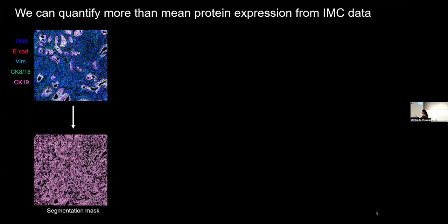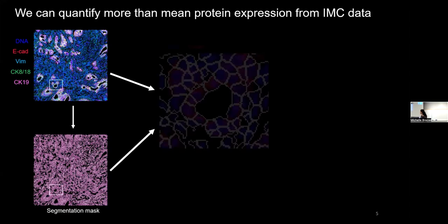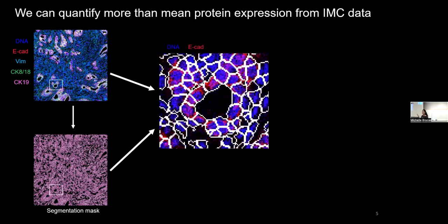So here again, we have an IMC image with this single cell segmentation mask. And I'm going to zoom in just a little bit in this one region. And I'm only showing the DNA and E-cadherin channels for simplicity. Now, notice how IMC has pixel level information for all of these channels. Now I can do what we've done previously, where I can take average across all these pixels to get the mean protein expression within single cells.